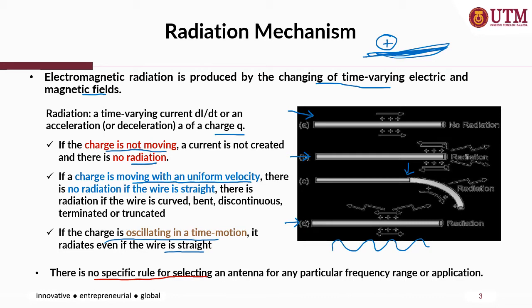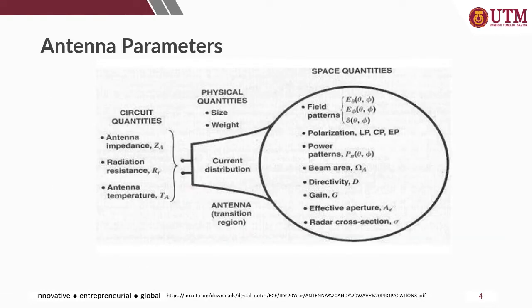For example, the antenna system may need narrow bandwidth, very high efficiency, broad beam width, and so on. The slide shows the antenna parameters from the circuit design process up to the transmission state. In this course, we are going to discuss space quantities related to the radiation pattern, polarization, directivity, gain, and so on.